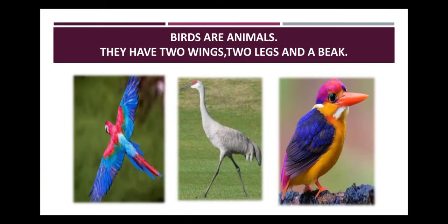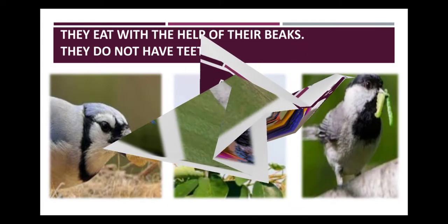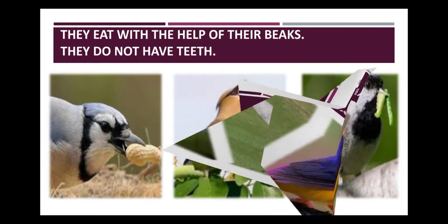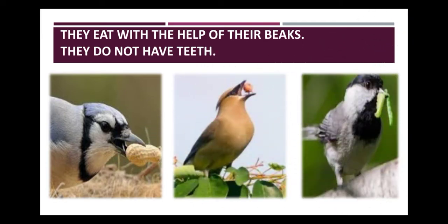Birds are animals. They have two wings, two legs and a beak. They eat with the help of their beaks. They do not have teeth. They eat nuts, fruits, worms, fishes, etc.